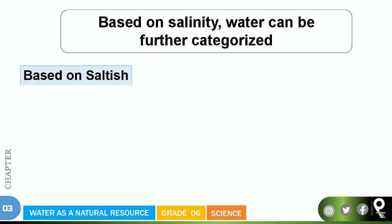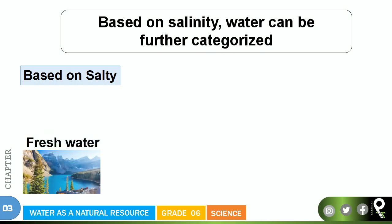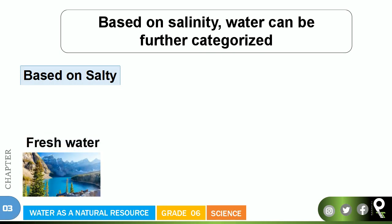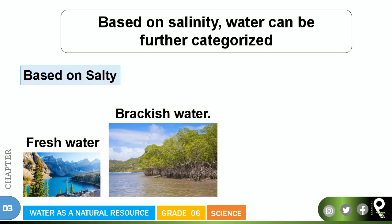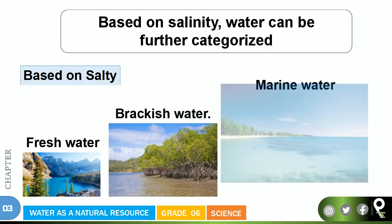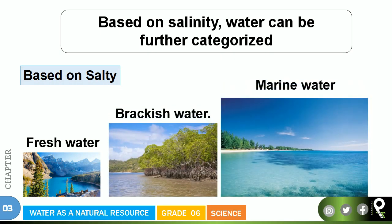So based on saltiness, we can put them in order: fresh water is the least salty, brackish water comes in second place, and marine water has the most saltiness. The most salt is always found in marine water.